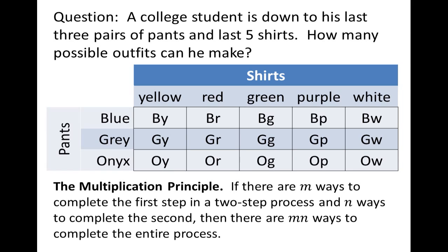Suppose we have a two-step process. If there are m ways to complete the first step and n ways to complete the second step, then there are m times n ways to complete the entire process. As with the sum principle, this can extend to more than just two steps — maybe a ten-step process — same sort of idea.